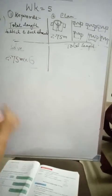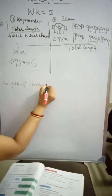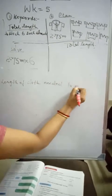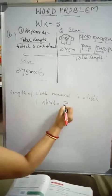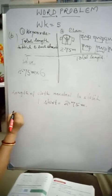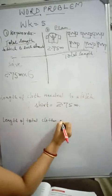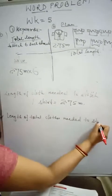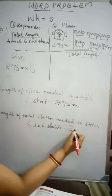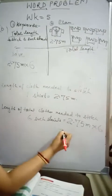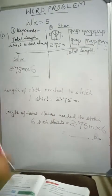Let us write the statements. Length of cloth needed to stitch 1 shirt equals 2.75 meters. Length of total cloth needed to stitch 6 such shirts equals 2.75 meters multiplied by 6. After multiplication you will write the answer there. You have to find it out. Now come to the next question.